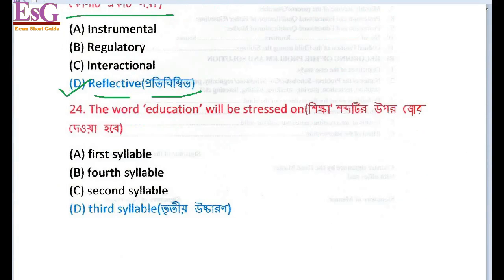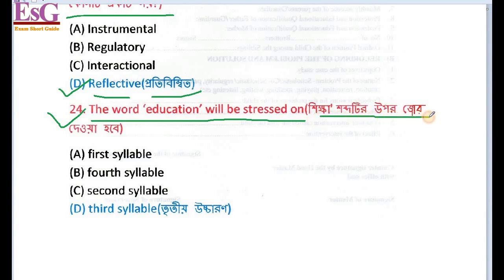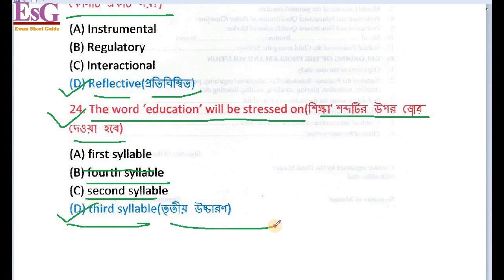Last number 24: The word 'Education' — the stress is on which syllable? Options are first syllable, second syllable, third syllable, and fourth syllable. The answer is third syllable — 'ed-u-CA-tion' — the stress falls on the third syllable.